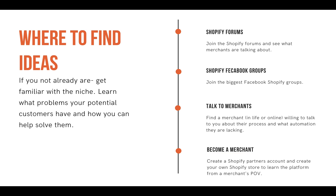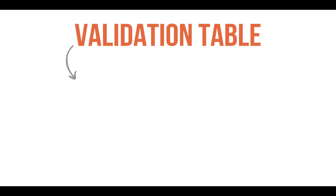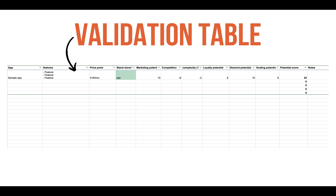Those are our best recommendations for where to find ideas. If you have your own, we'd love for you to share them in the comments. Now, the next step is to write down any idea that comes to mind — whether during a call with a merchant, a brainstorming session, or a walk outside. Write it down. This is the first step to collecting all your ideas and deciding which one to pursue. We have a simple and clear formula for this: a validation table that we actually use today when deciding which idea to work on next. Write all your ideas in the app section — just the name of the app.